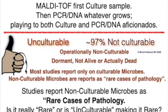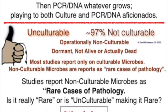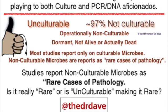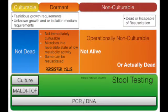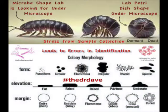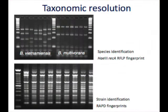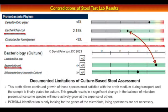97% of microbes are not culturable — they're either not culturable, or operationally non-culturable, meaning they go dormant, or they're not alive, or actually dead by the time they reach the lab. Most studies report only on culturable microbes, and non-culturable microbes are reported as rare cases of pathology. Not because they don't cause problems — it's because they can't see them, so they don't exist and didn't cause the disease. So are cases of disease really rare, or is it that unculturable microbes are simply not observed, making it appear rare?